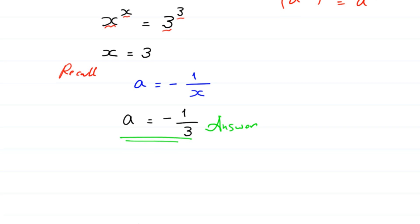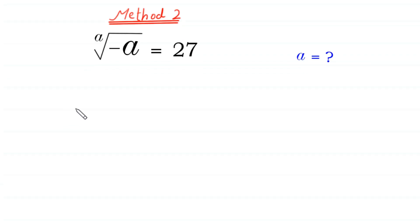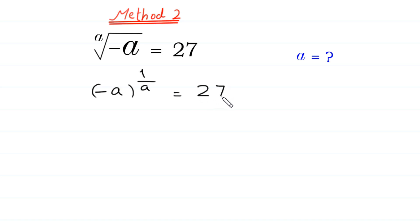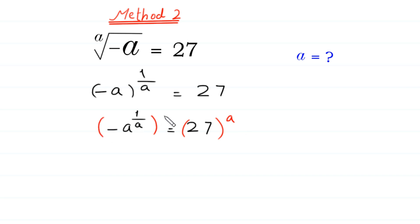Now let us solve this equation by Method 2. In this method, we can write the ath root of negative a as negative a to the power 1 over a, equal to 27. We take power a on both sides: negative a to the power 1 over a, raised to the power a, equals 27 to the power a. This power a cancels with power 1 over a, leaving negative a equals 27 to the power a.